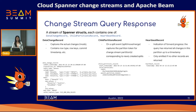The change stream TVF returns a stream of Spanner structs, each containing one of: a data change record, a child partition record, or a heartbeat record. A data change record captures actual data changes and also captures metadata such as the type of change (insert, update, delete), the commit timestamp, and the Spanner primary keys. The child partition record contains the partition token corresponding to the change stream partitions that correspond to the newly created splits, as mentioned before.